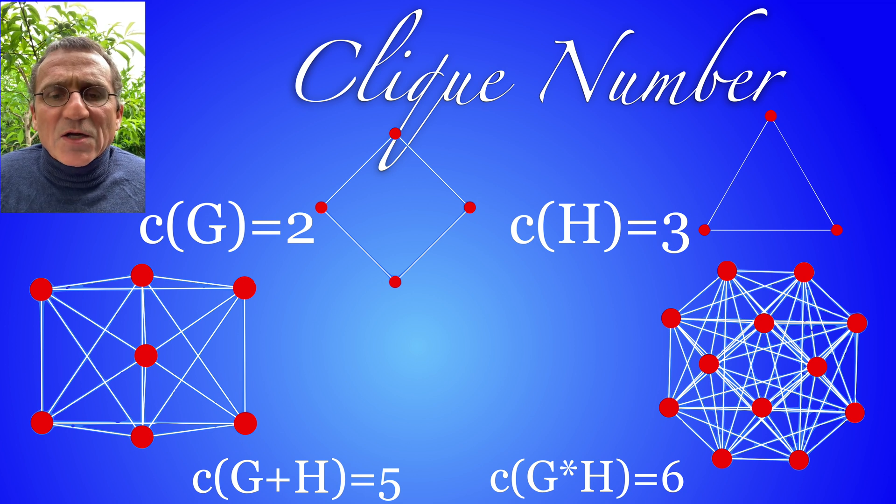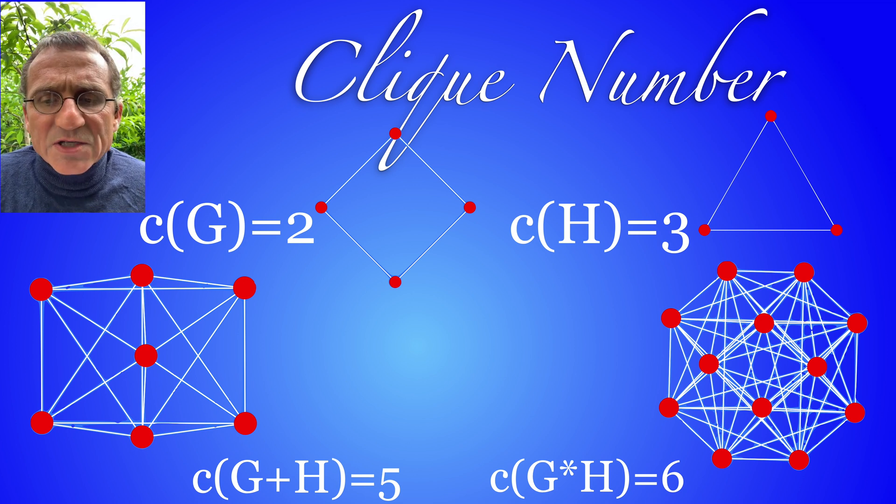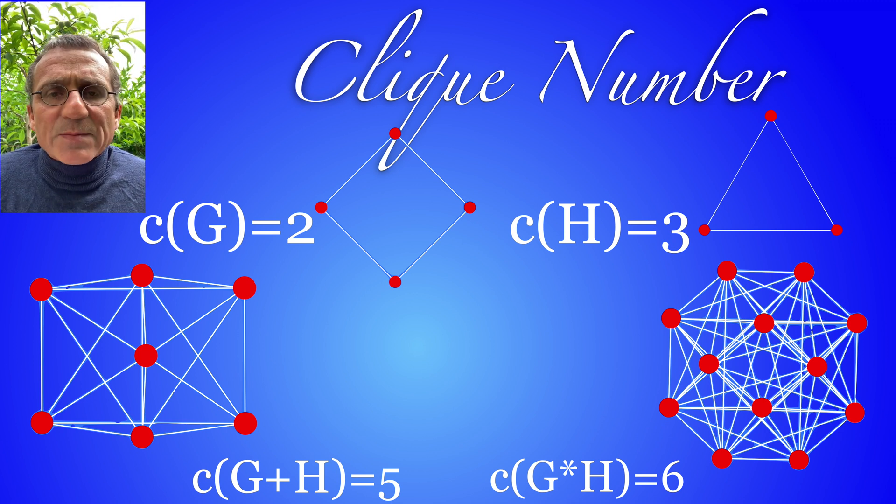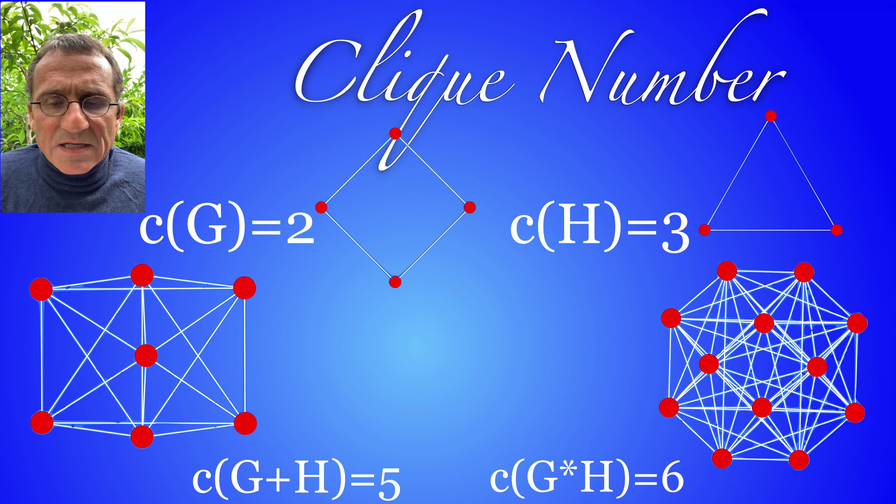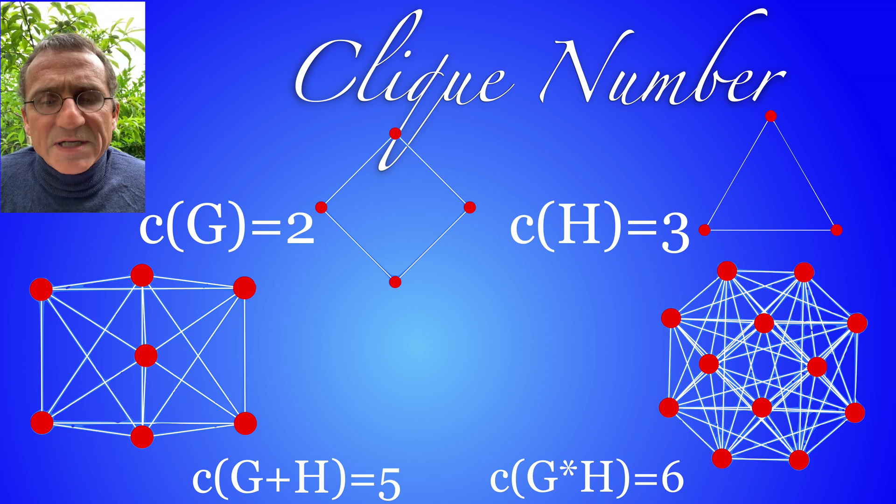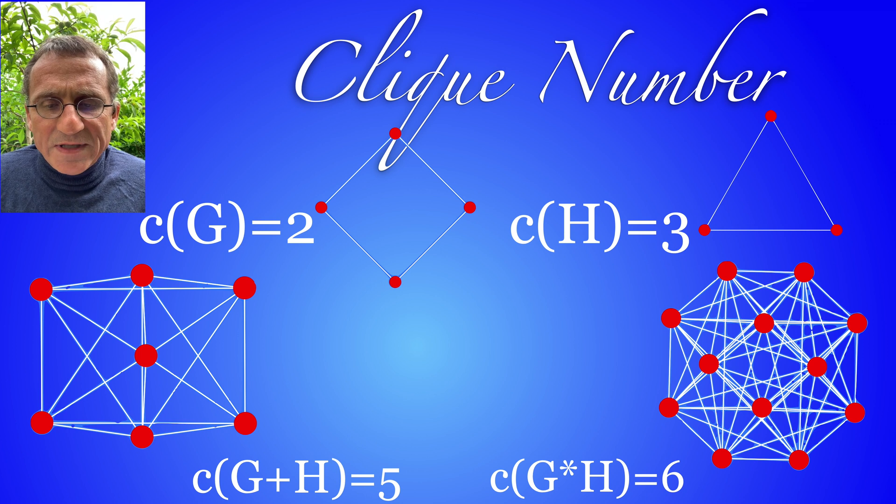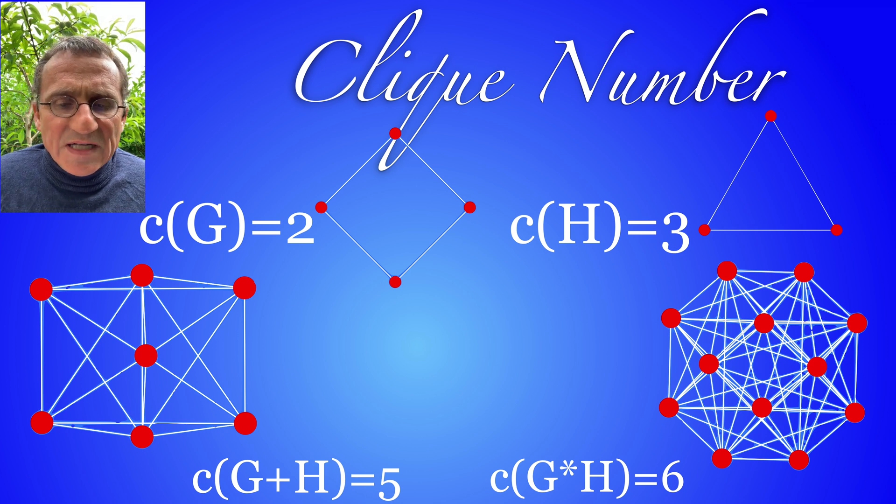Then we can look at the clique number, it's the cardinality of the largest clique, a group of vertices all connected to each other. What is nice about the clique number is that it is both additive with respect to addition and multiplicative with respect to multiplication so it counts things correctly on a dimension level.